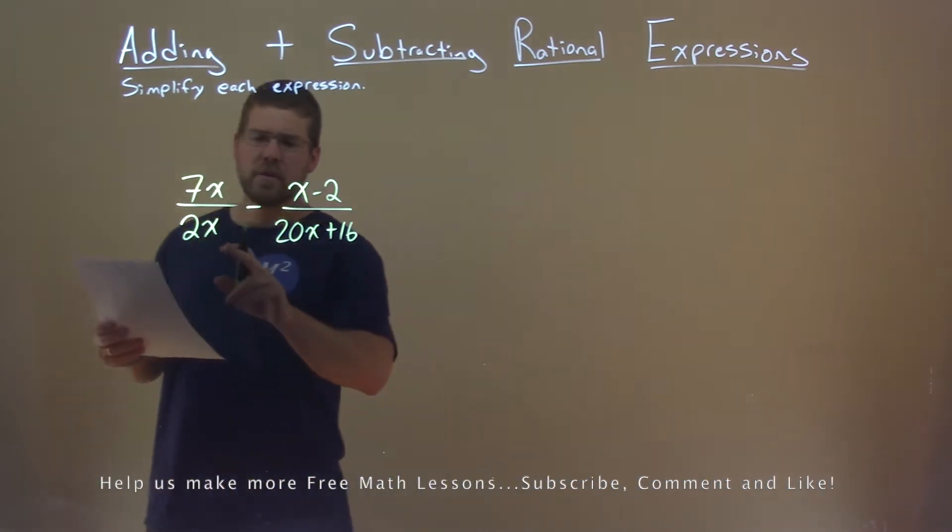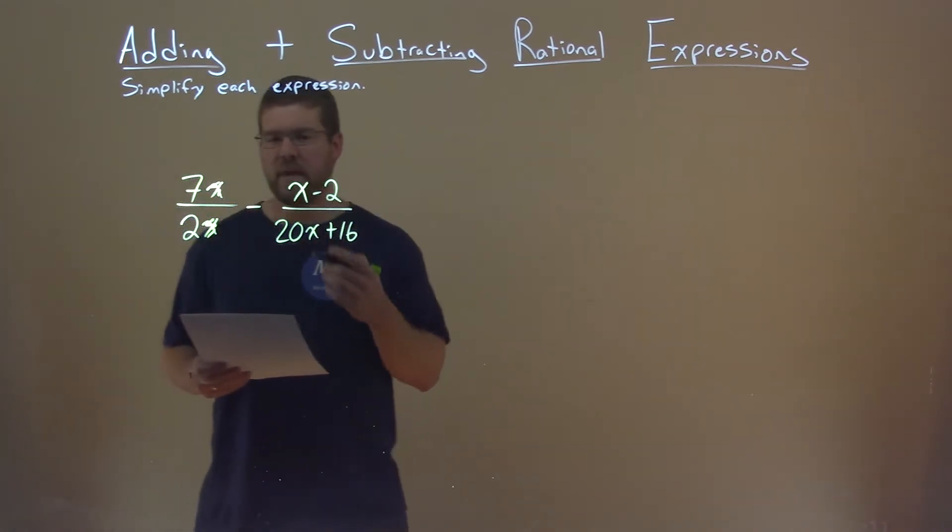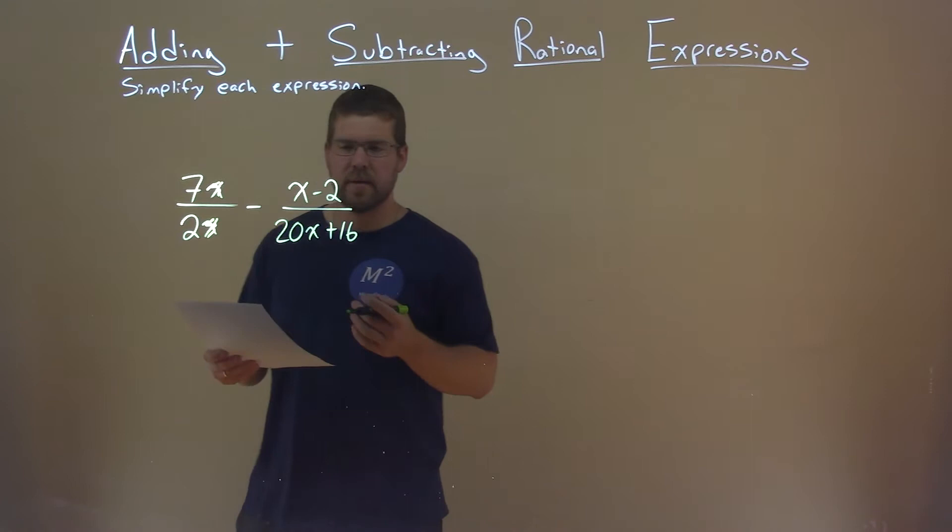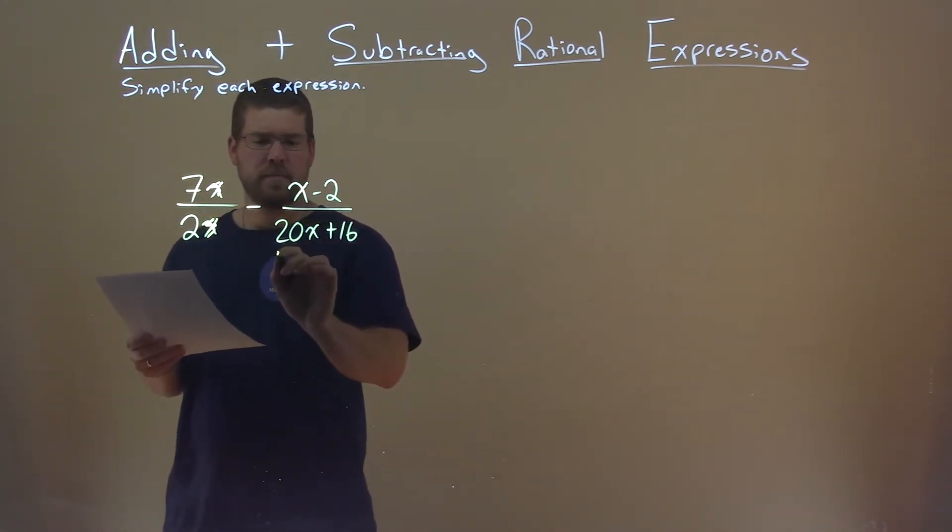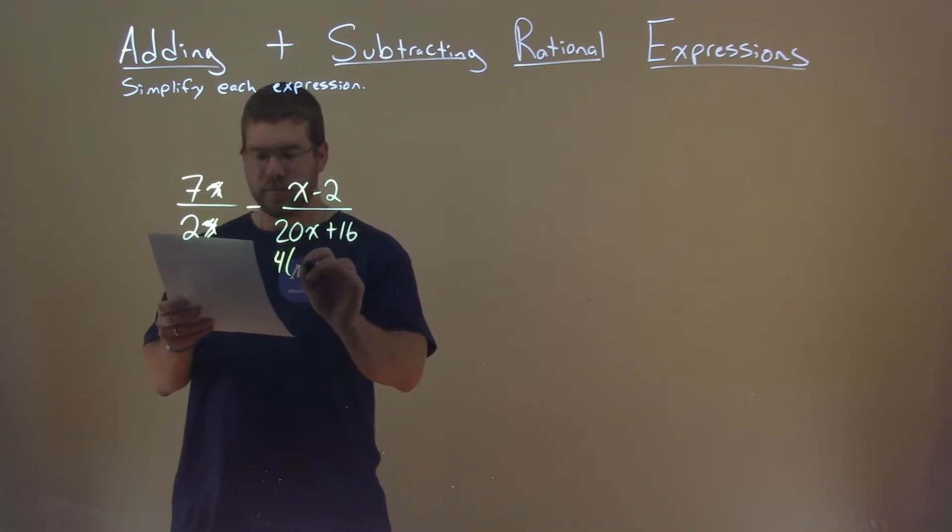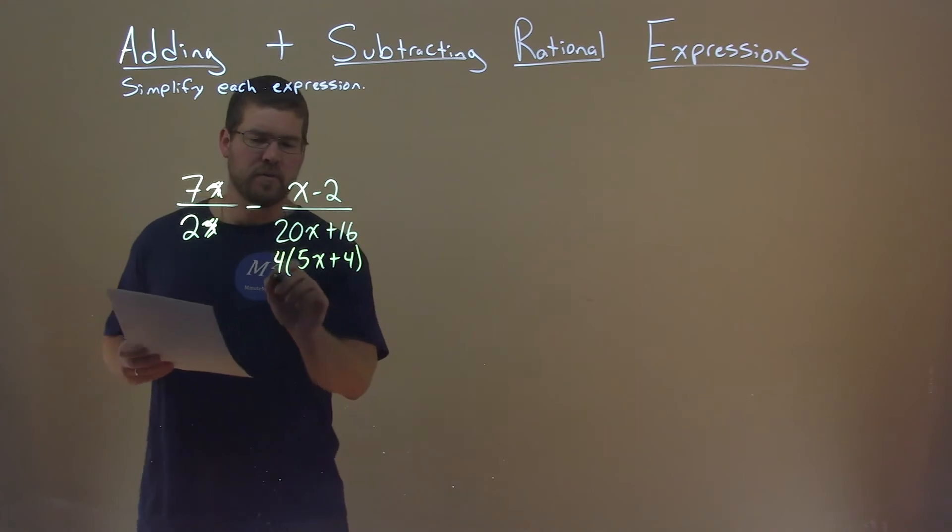One of the first things I notice is that there's an x here and x here. So I quickly can cancel that out. We'll try to simplify where we can. 20x plus 16, I can pull out a 4 here. I have 4 times 5x plus 4 now. But notice that this 4 is also 2 times 2. Let's keep that in our mind.